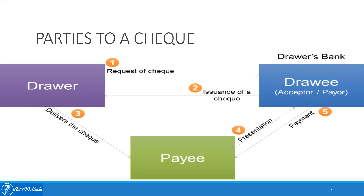So you can see how this entire cycle works. The drawer will first get the checks or checkbook issued by the bank, which is the drawer's bank. Whenever a drawer makes a request for availing a check, the bank issues the checkbook, and after receiving it the drawer can use it as and when required. Suppose there is a payment pending towards some friends or utility bills — the drawer can then issue a check to that particular payee or to the person or company who is entitled to receive the payment.